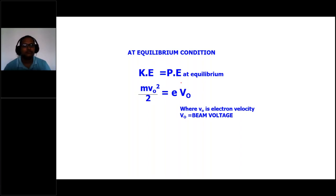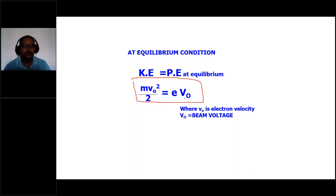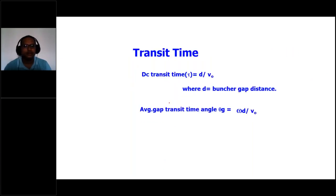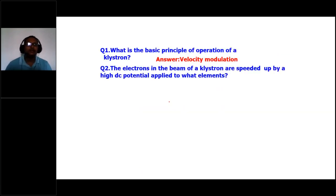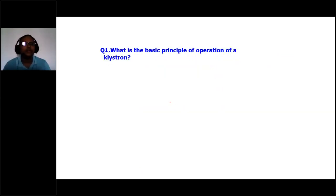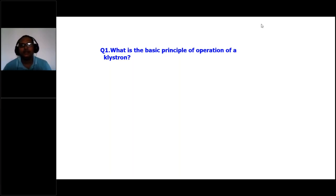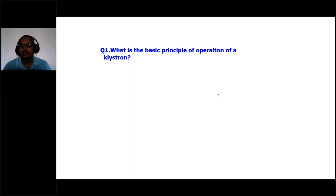The initial velocity of the electron beam is calculated from KE = PE: mv₀²/2 = eV₀, where V₀ is the beam voltage and v₀ is the initial electron beam velocity. The basic principle of operation of a klystron is velocity modulation — the RF signal interacts with the electron beam at the cavity gap, modifying electron velocities.